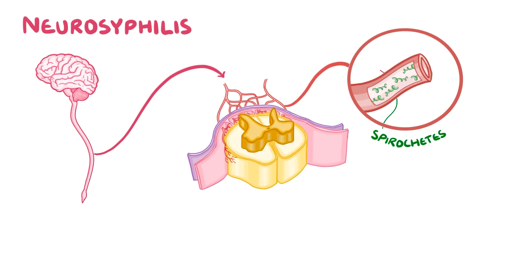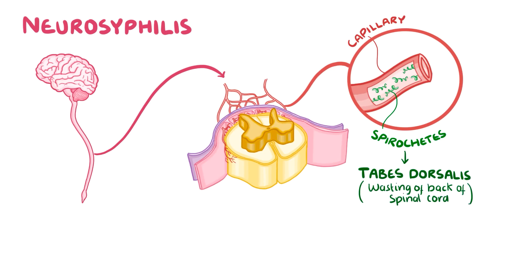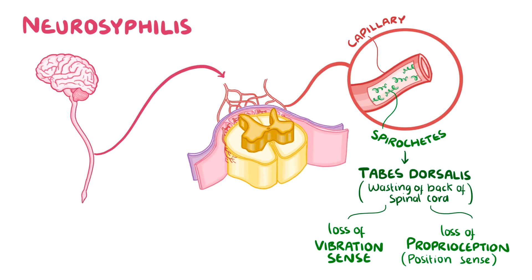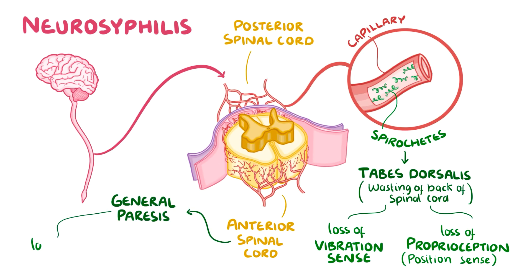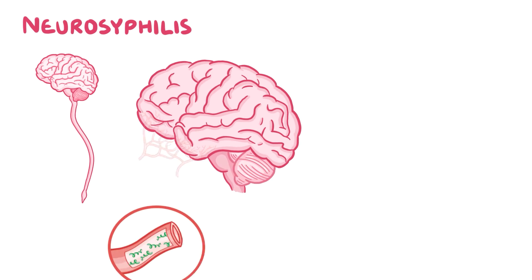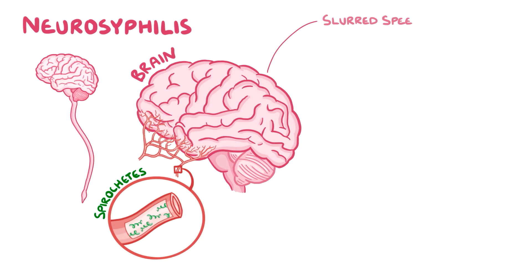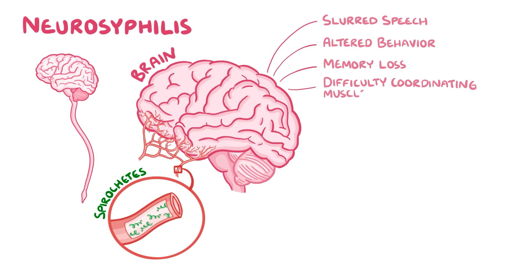In neurosyphilis, the spirochetes set up camp in the capillaries supplying the posterior, or back part of the spinal cord, and this can result in something called tabes dorsalis, which literally translates as wasting or loss of the back of the spinal cord. The protective sheath covering the nerves running along the back of the spinal cord is damaged, resulting in a loss of vibration sensation and a loss of proprioception — the sense of position of the joints and other body parts like the hands and feet. Sometimes the spirochetes invade the capillaries supplying the anterior or front of the spinal cord, resulting in general paresis, which causes loss of sensation, weakness, or sometimes even paralysis, mostly in the legs. If spirochetes get into the capillaries serving the brain, that can cause slurred speech, altered behavior, memory loss, difficulty coordinating muscle movements, and even paralysis.